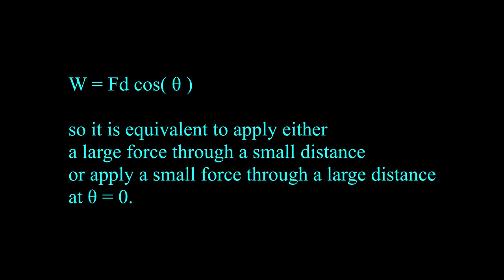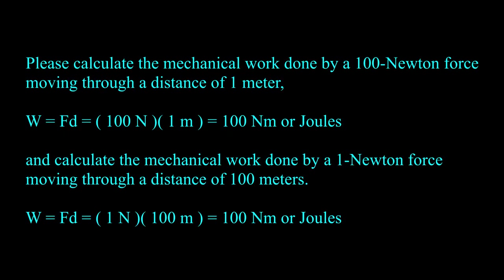Mechanical work includes the product of force and displacement, so it is equivalent to apply either a large force through a small distance, or a small force through a large distance. For example, calculate the mechanical work done by a 100 newton force moving through 1 meter, and by a 1 newton force moving through 100 meters. Both are 100 newton meters, or joules.